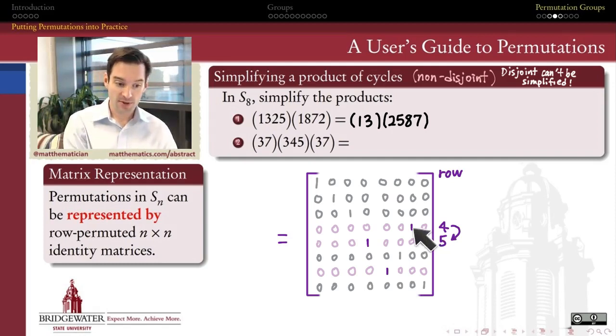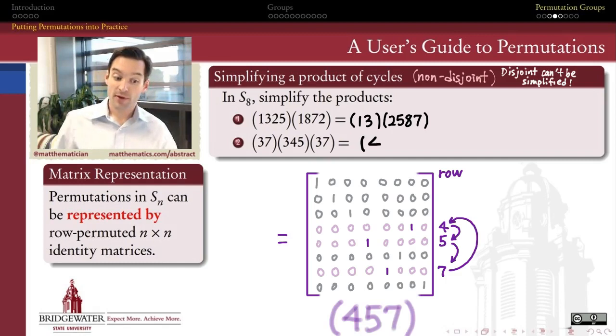The fourth row, for example, we should have seen, if it were the identity matrix, the one would have been in the fourth position. Instead, the one is over here. So row 4 has clearly been moved. Where did it move to? It moved into the fifth row instead. So 4 goes to 5. But that also means that the fifth row is out of place. Row 5 ends up here in position 7. So 5 goes to 7. And then the seventh row is out of place. We find it back here in position 4. So what permutation are we talking about? We're talking about the permutation which has cycle notation (4 5 7).